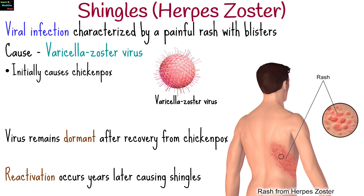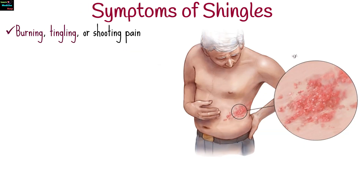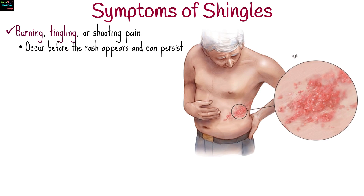Shingles typically begins with a painful rash that may be preceded by symptoms such as pain — often described as a burning, tingling, or shooting pain — which can be intense. This pain may occur before the rash appears and can persist throughout the duration of the outbreak.